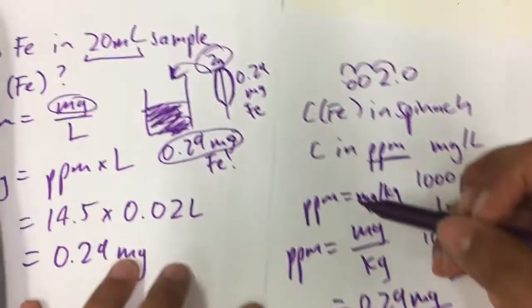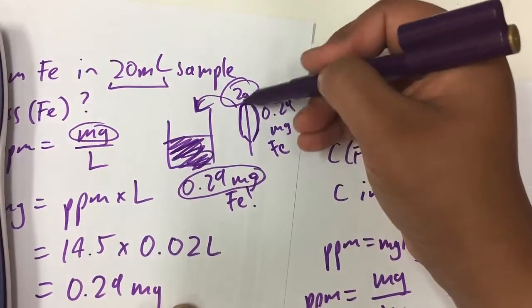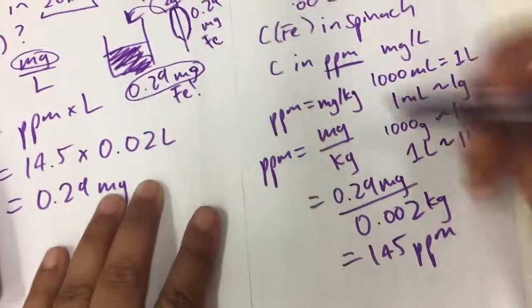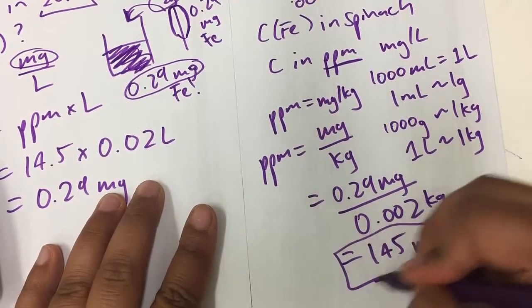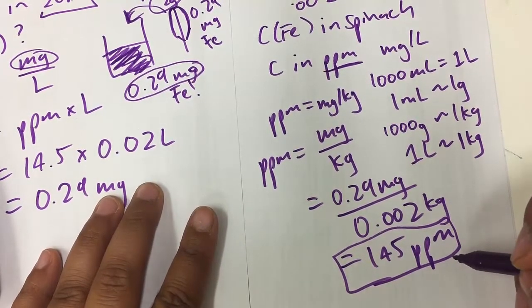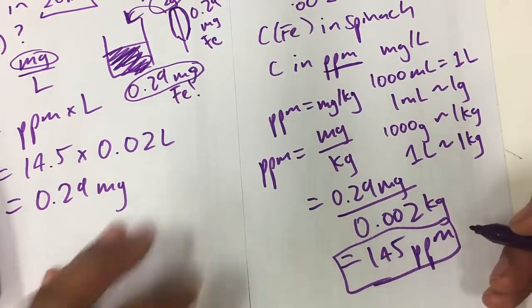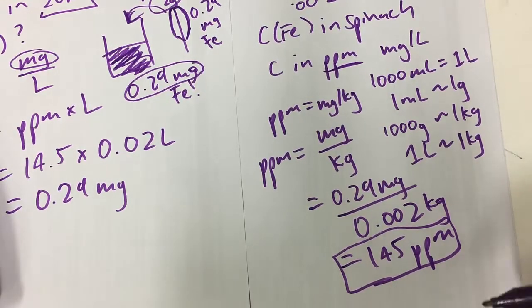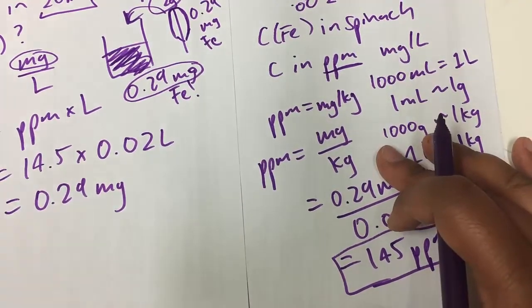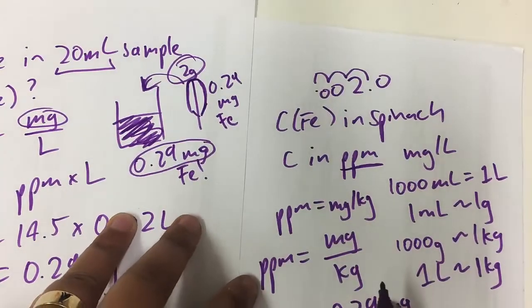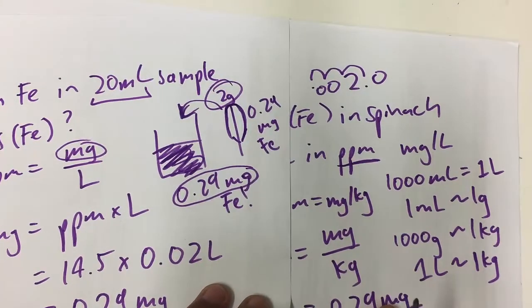And that would give us a concentration of 145 ppm. So that means that the concentration of iron in two grams of spinach was approximately 145 ppm. I don't know if that's right or real. I was just making those numbers up. That's an example.